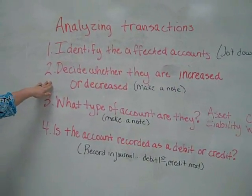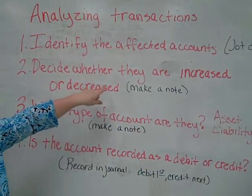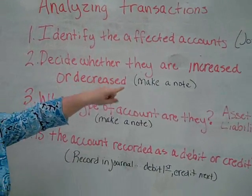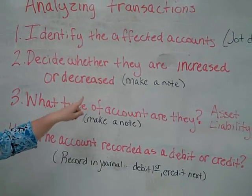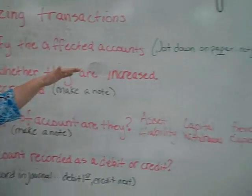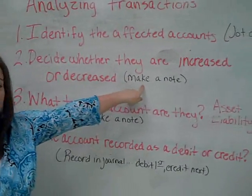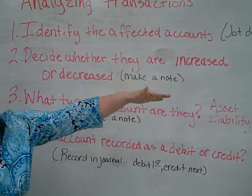Step two: you need to decide whether these accounts are increased or decreased. So beside where you jotted down the accounts, make a note — a plus or a minus.